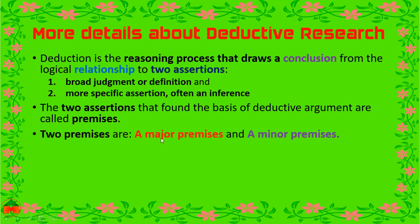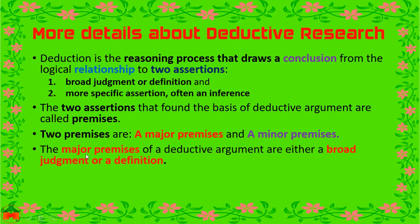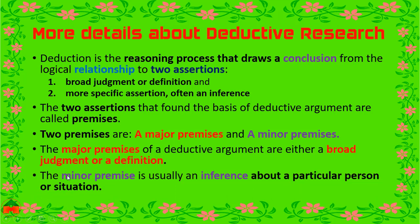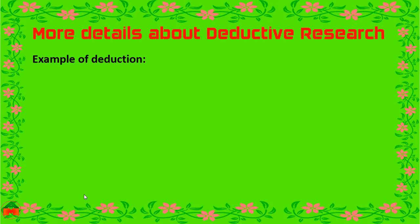One premise is known as the major premise and the other is known as the minor premise. The major premise of a deductive argument is either a broad judgment or a definition. On the other hand, a minor premise is usually an inference about a particular personal situation. Now we can see an example of deduction.